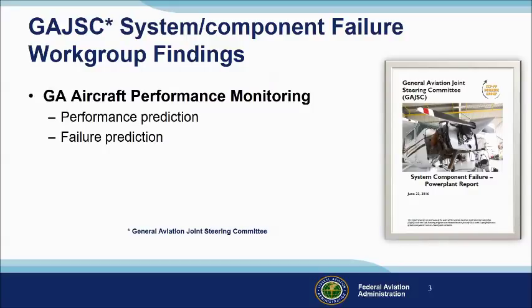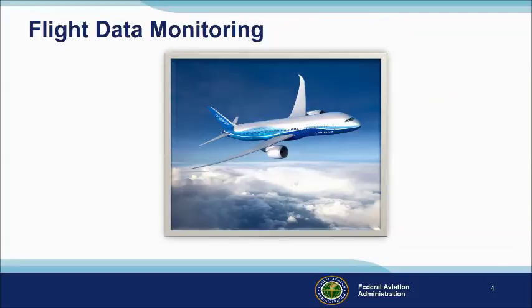The General Aviation Joint Steering Committee is a government industry group that studies GA mishaps. Here are some findings of their recent study of system and/or component failure accidents. This workgroup recommends that aircraft performance be monitored in order to develop realistic performance expectations and to predict system or component failure. Flight data monitoring has been around since before the jet age, and modern airplanes make extensive use of automated technology to optimize performance and to predict failures before they occur.